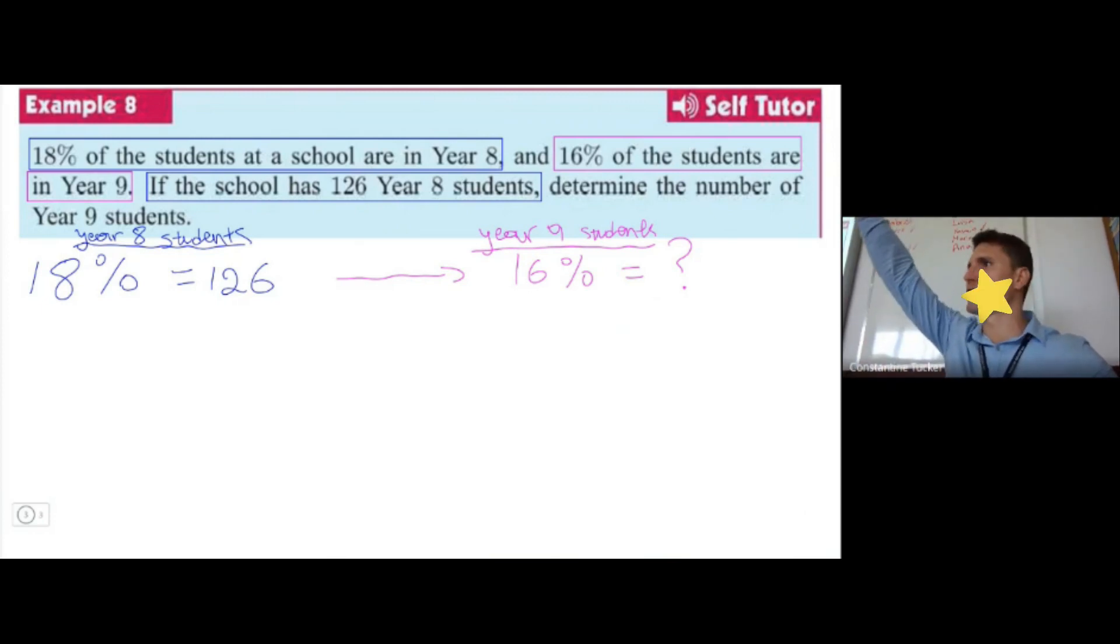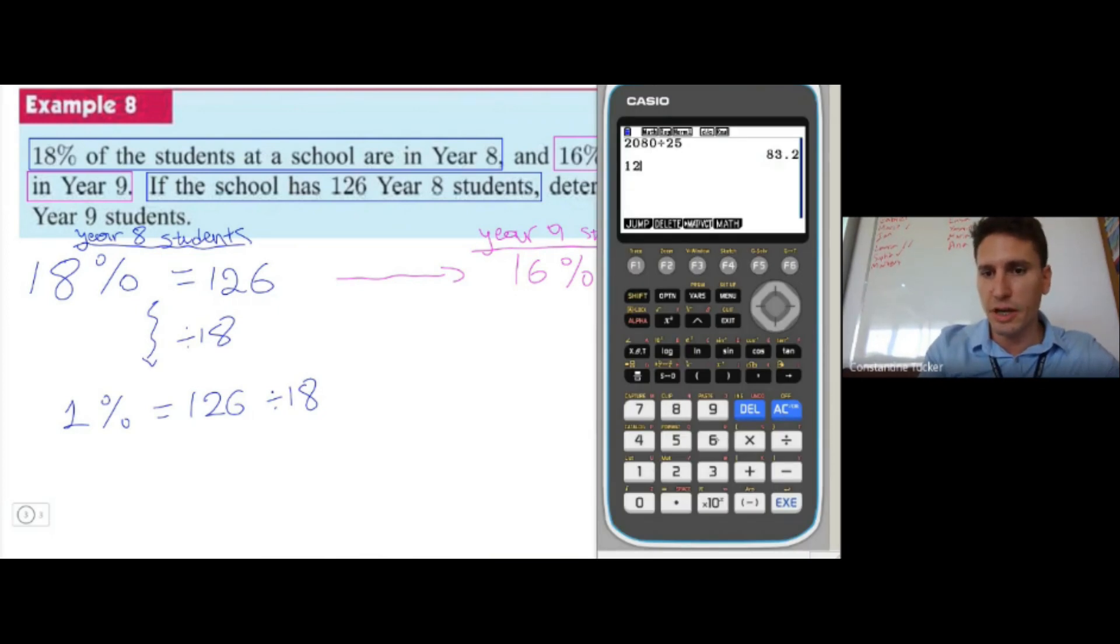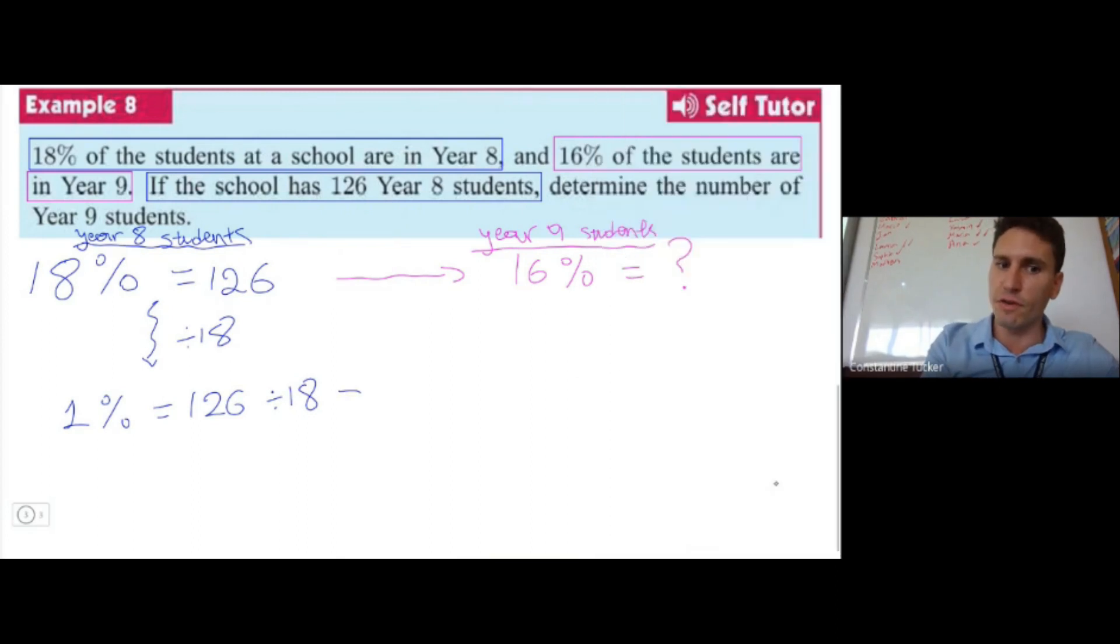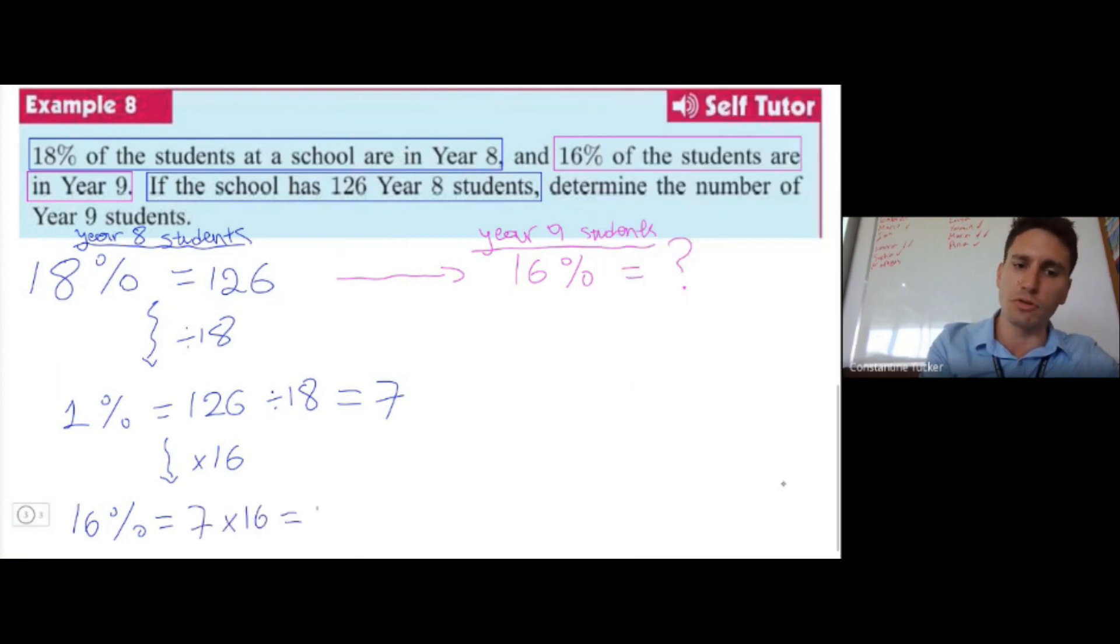Excellent, excellent! You get a reward point for this. So we know 18% is equal to 126, so he said let's divide this by 18 to get 1%. So 1% is going to be equal to 126 divided by 18. What is 126 divided by 18? That gives us 7. Feel free to use a calculator for this guys, it's a bit tricky to do in our heads. And now from this, we get to 16% by multiplying by 16. So 16% will be equal to 7 times 16, which gives us 112. So we know that 16% is actually equal to 112 students.